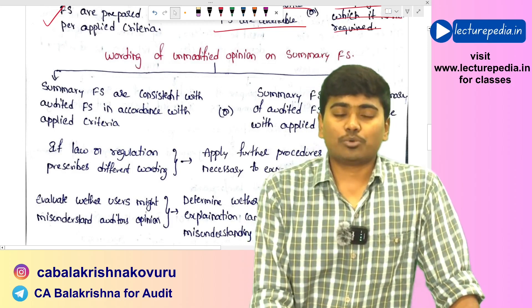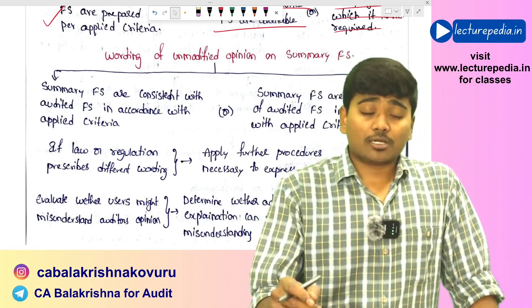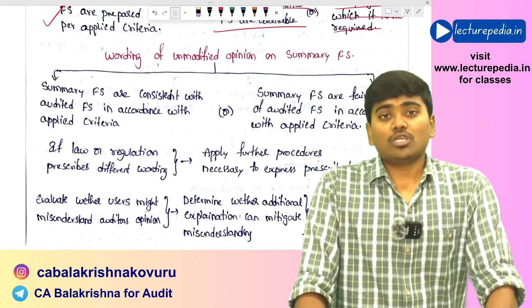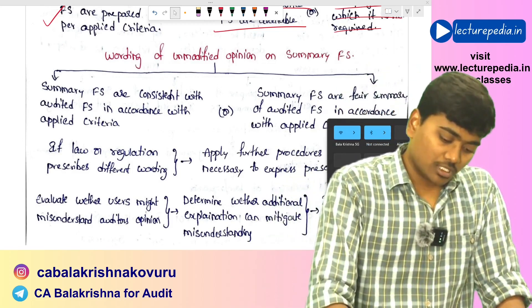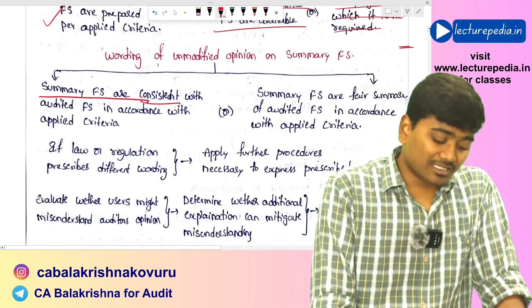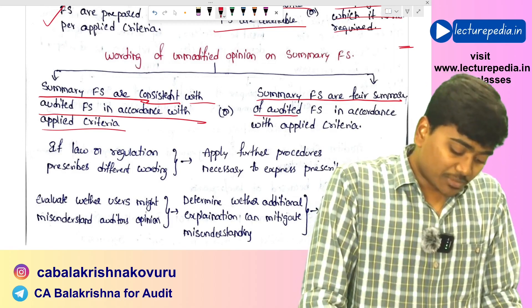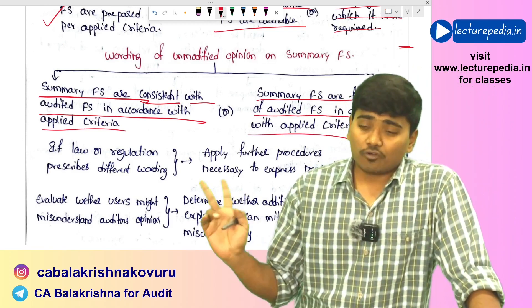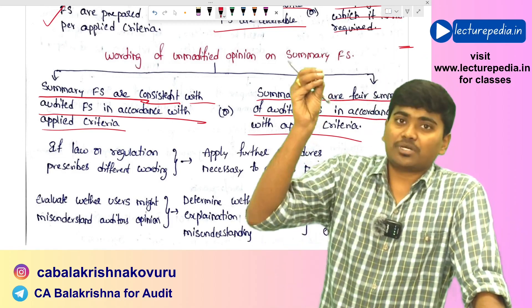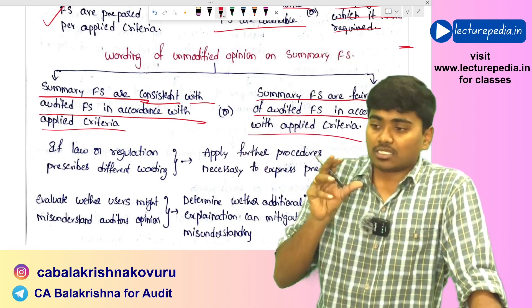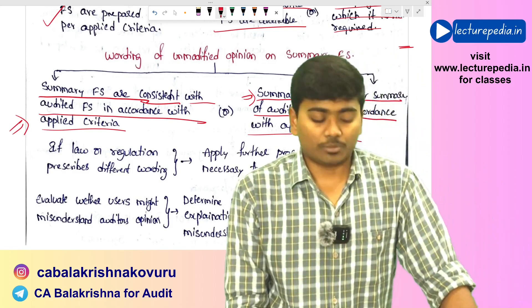Coming to reporting — just like on a complete set of financial statements, the auditor gives an opinion on summary financial statements too. If the opinion is unmodified (clean opinion), either of two terminologies can be used: 'Summary financial statements are consistent with the audited financial statements in accordance with applied criteria,' or 'Summary financial statements are a fair summary of audited financial statements in accordance with applied criteria.'